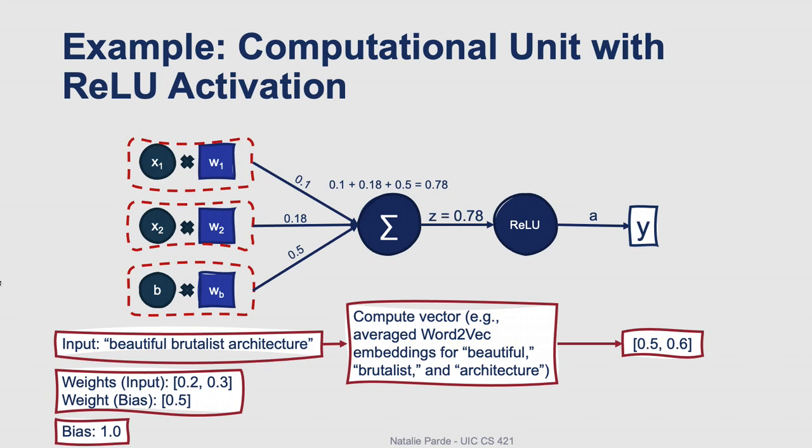Here's our same case example once again. So we're back at the point where we have our z value, and we've replaced tanh with ReLU now. So since we're using ReLU this time, we just need to take the maximum of our z value and zero, so that's the maximum of 0.78 and zero. The maximum of those two values is 0.78. So that'll be our activation value, and we'll go ahead and pass it along as our output.